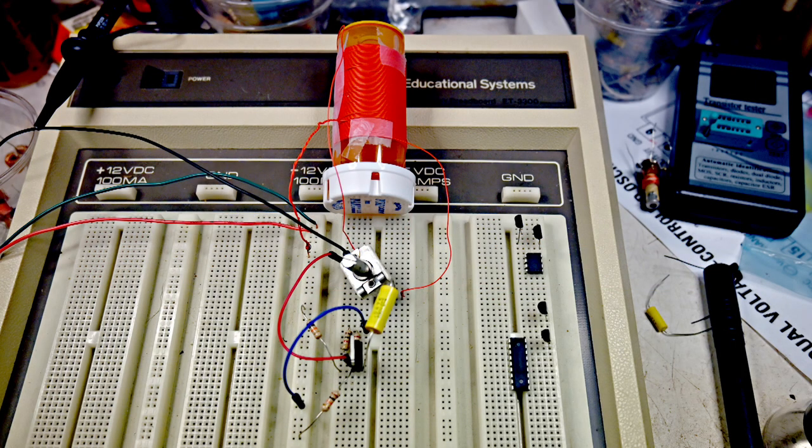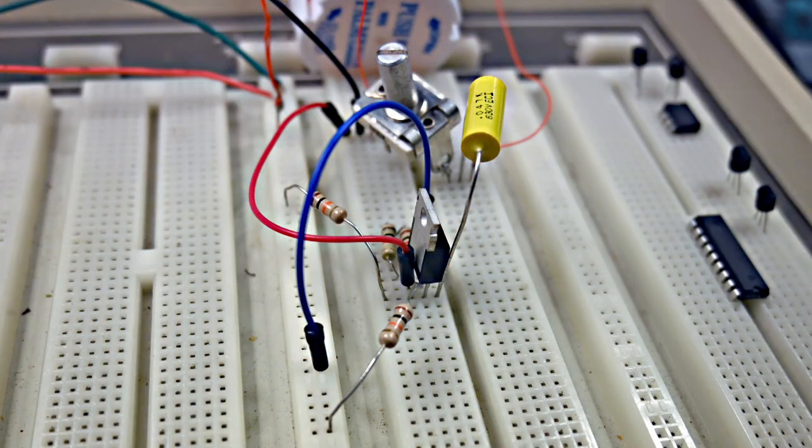Here's the build. You can see there's not a whole lot to it. Just a MOSFET, a few resistors, a capacitor, a variable capacitor, and a coil. Here's a closer look at the components.